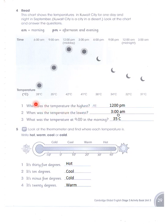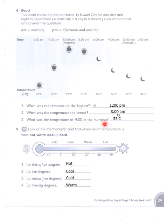Now, when was the temperature the highest? The highest temperature is 42 degrees centigrade, which was at 12 PM — that is midday. When was the temperature the lowest? It was lowest at 3 AM — 31 degrees centigrade. What was the temperature at 9 o'clock in the morning? At 9 AM it was 35 degrees centigrade.